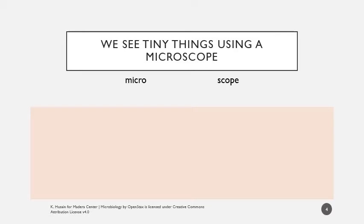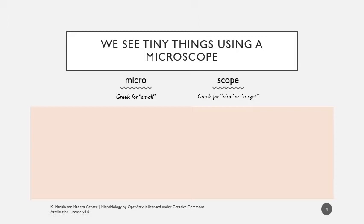We can break the word 'microscope' into micro and scope. Micro is Greek for small, and scope is Greek for aim or target — like a periscope on a submarine or a scope on a rifle. As often as possible, I want to teach you what words mean. There's so much terminology in biology, and understanding naming conventions will get you much farther than just trying to memorize everything. If you see a word that looks like a lot, break it into smaller pieces and take them one step at a time.